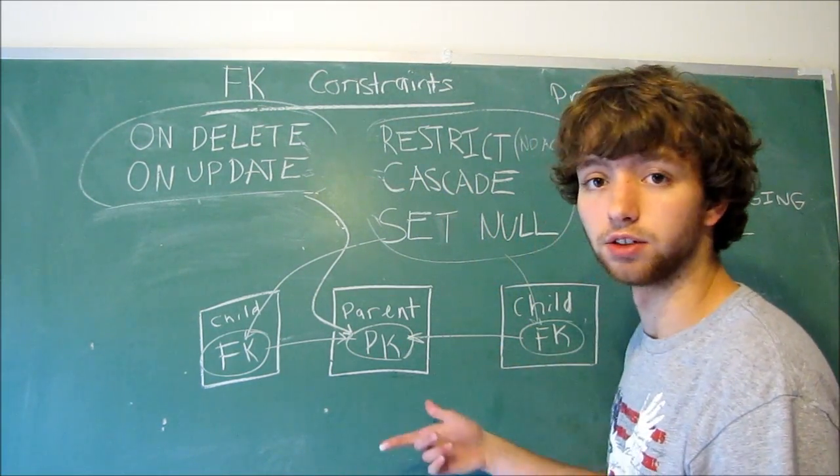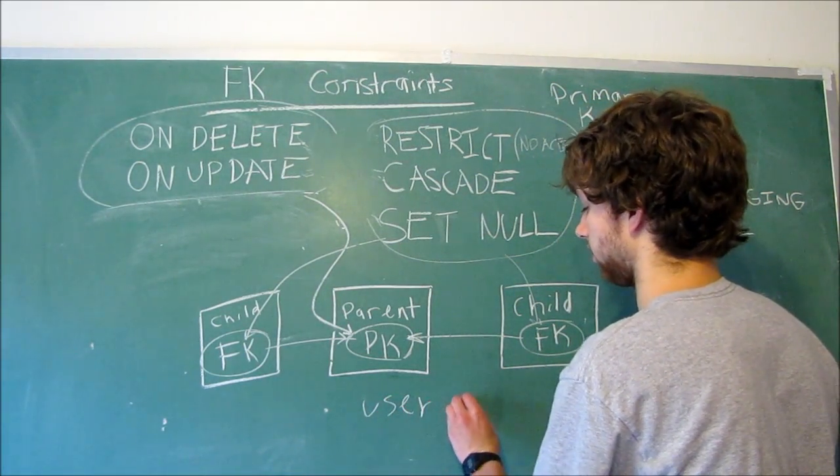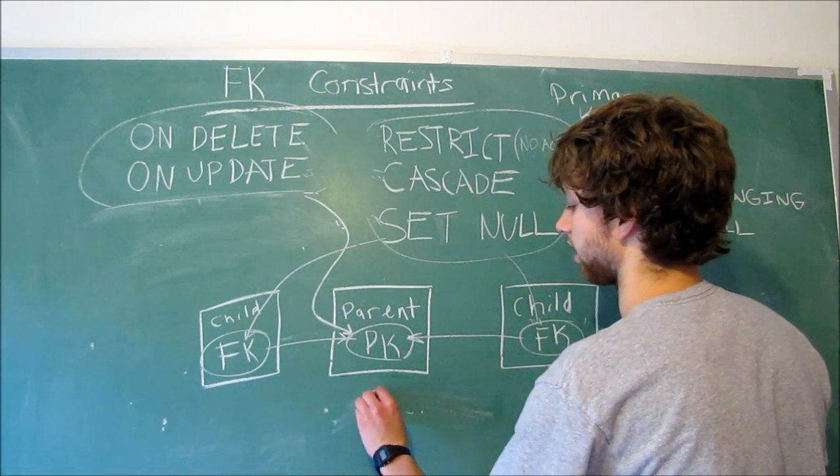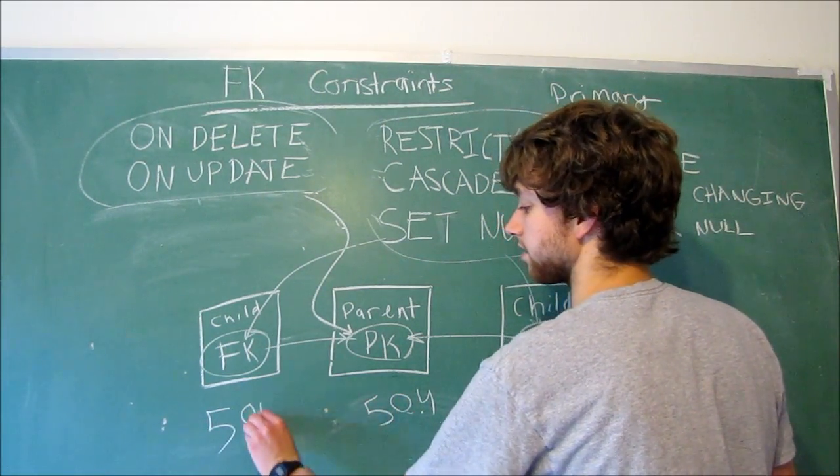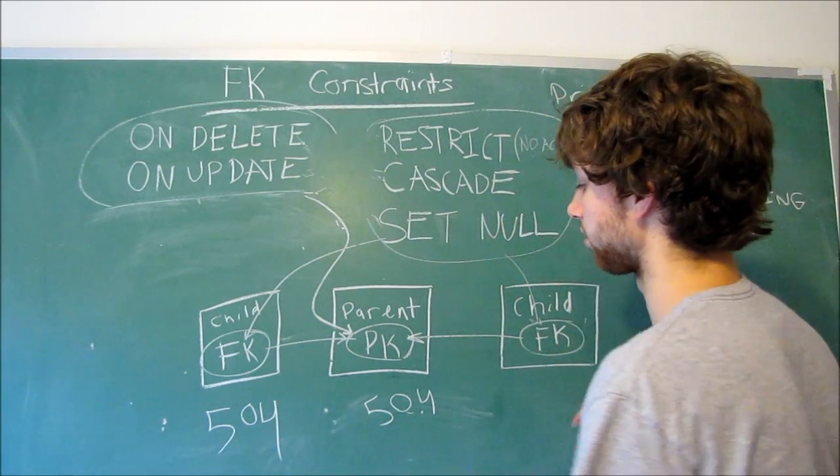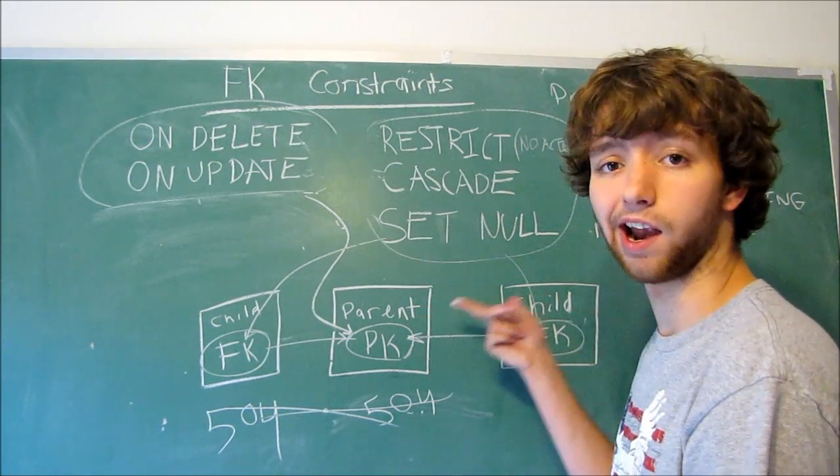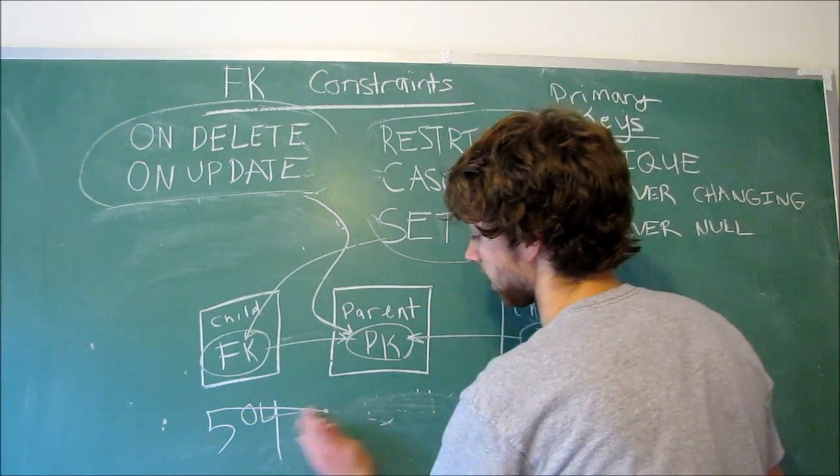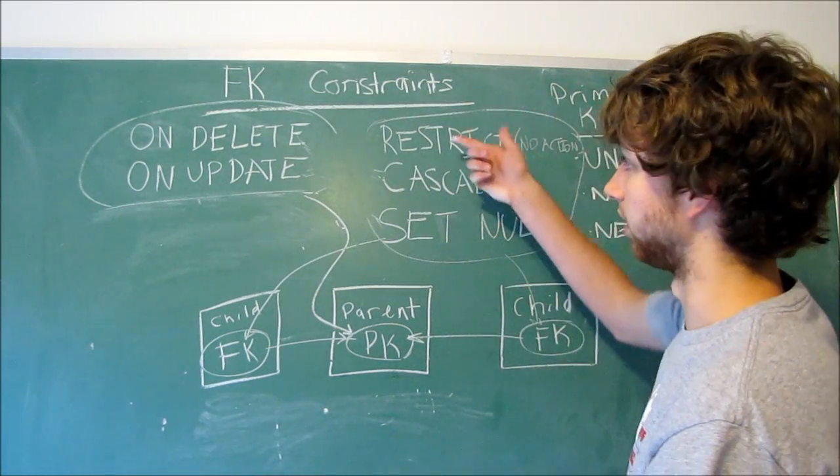So if I tried to delete the user with the ID of 504, and then this child has a row that has 504 within the foreign key column, well, then it's going to throw an error, and it's not going to happen, and the parent will not be deleted. Not going to happen. So that's how CASCADE ON DELETE works. I'm sorry, RESTRICT ON DELETE.